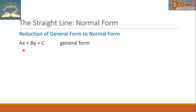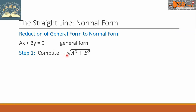We know that the general form is Ax plus By equals C. In reducing this to normal form, step 1 is to compute plus or minus the square root of a squared plus b squared, where a is the coefficient of x and b is the coefficient of y.